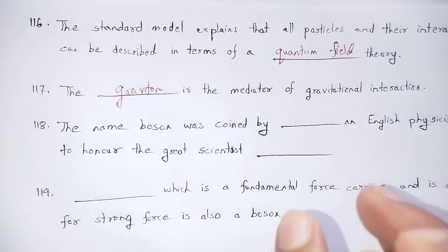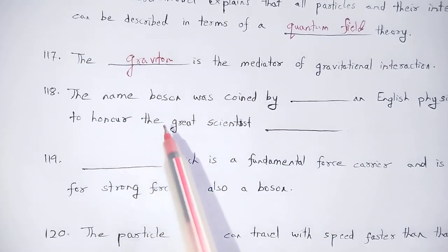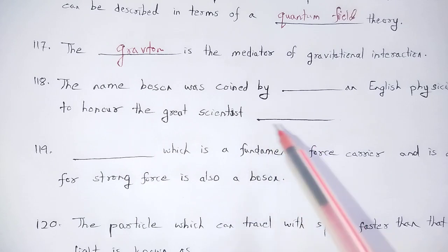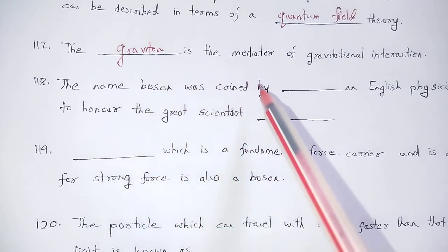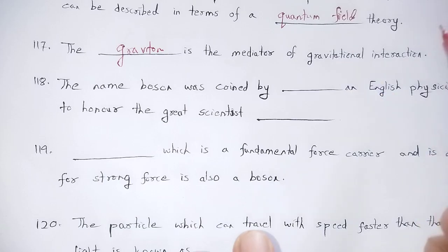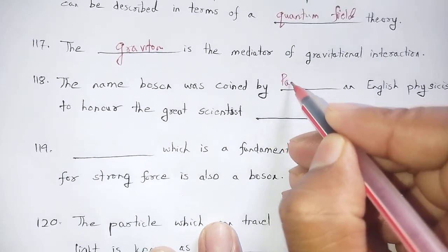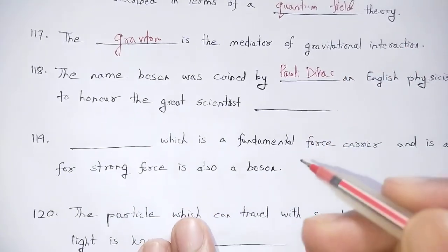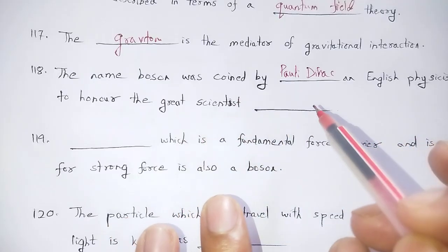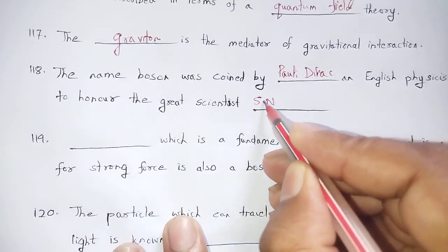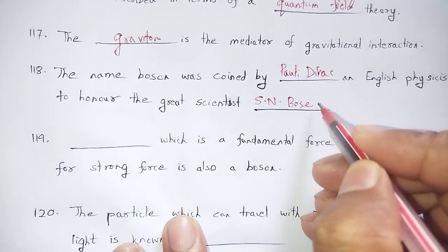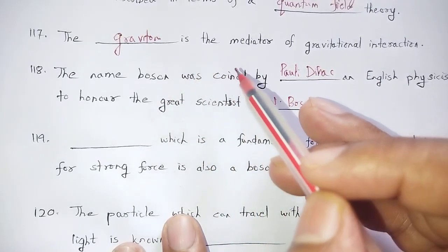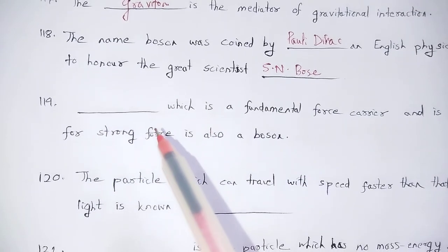The graviton is the mediator of gravitational interaction. The name 'boson' was coined by an English physicist — Paul Dirac — to honor the great scientist Bose. The term boson was coined by Paul Dirac.